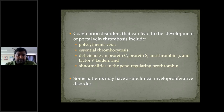Coagulation disorders can lead to development of portal vein thrombosis, which can cause polycythemia and essential thrombocytosis. Essential thrombocytosis is defined as platelet count more than 6 lakhs per cubic millimeter of blood without any septic cause. Deficiencies of protein C, protein S, antithrombin 3, factor 5 Leiden mutation, and abnormalities in prothrombin gene regulation also contribute to these coagulation disorders.